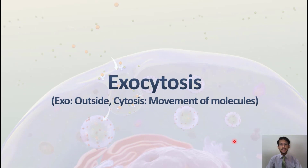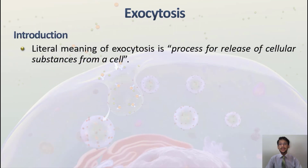Now we will talk about exocytosis, which is the complete reverse of endocytosis. Exocytosis is made up of two words: 'exo' meaning outside, and 'cytosis' meaning movement of molecules — so exocytosis means movement of molecules out of the cell. Whenever you release molecules or particles from inside the cell to the outside, that is called exocytosis. The literal meaning of exocytosis is 'the process for release of cellular substances from a cell.'